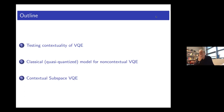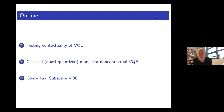I should say at the beginning that all of this work lives in the land of heuristic algorithms. There are significant obstacles to proving polynomial scaling of quantum algorithms on quantum simulation problems because that would give us marvellous, powerful results in computer science that we don't know how to prove. But I'll try to be clear about where what I'm saying is a theorem and where it's not.